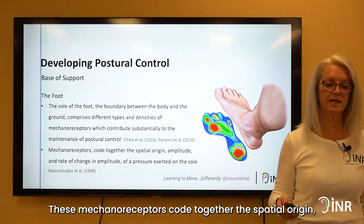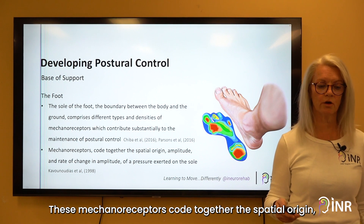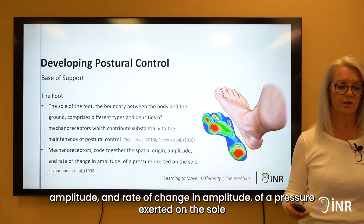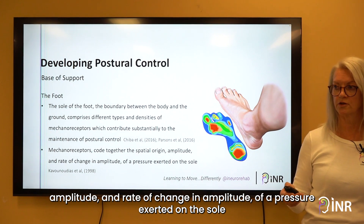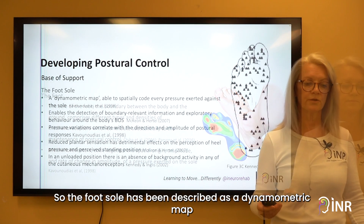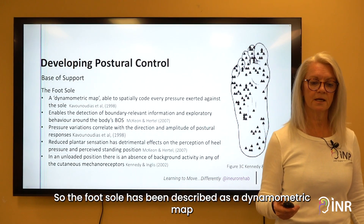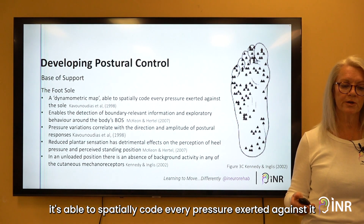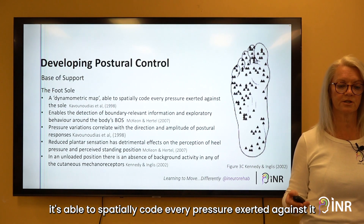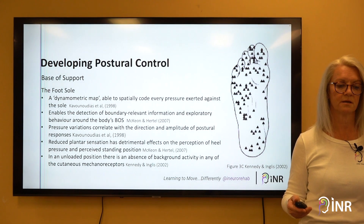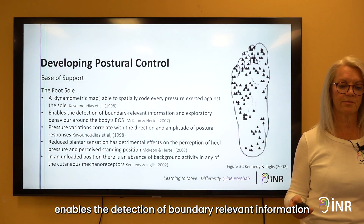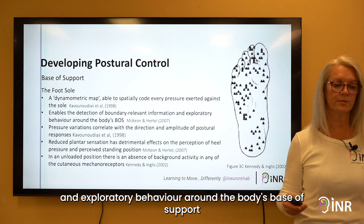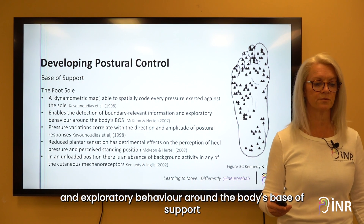These mechanoreceptors code together the spatial origin, amplitude, and rate of change in amplitude of pressure exerted on the sole. The foot sole has been described as a dynamometric map — able to spatially code every pressure exerted against it, enabling the detection of boundary-relevant information and exploratory behaviour around the body's base of support.